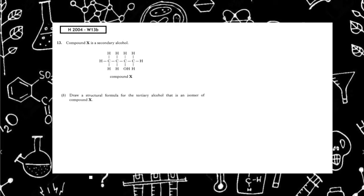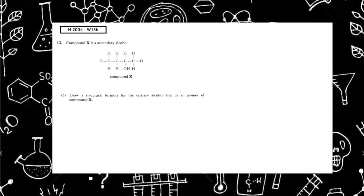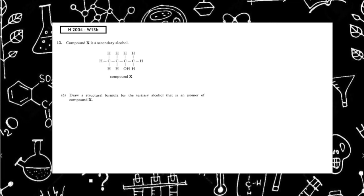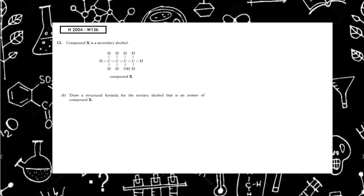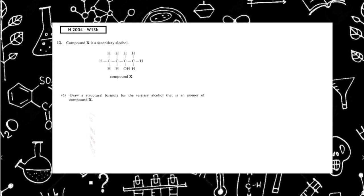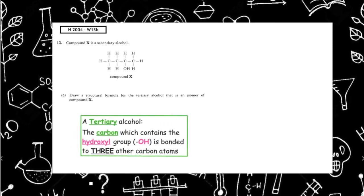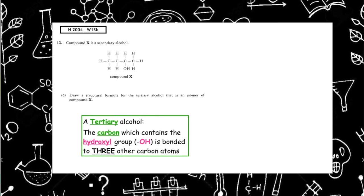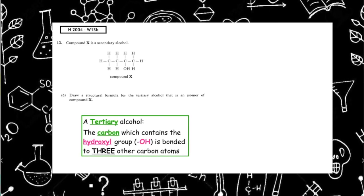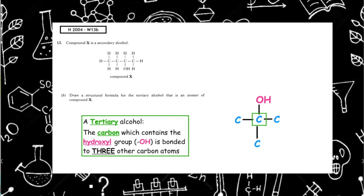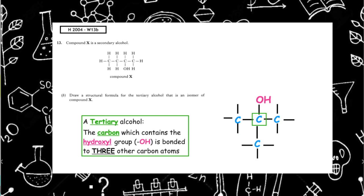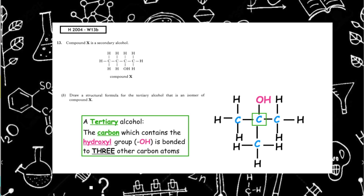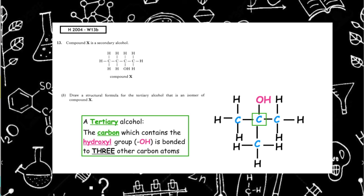Compound X is a secondary alcohol. Draw the structural formula for the tertiary alcohol that is an isomer of compound X. So remember the definition: a tertiary alcohol, the carbon which contains the hydroxyl group is bonded to three other carbon atoms. So if we draw the carbon with the hydroxyl group, we attach three other carbon atoms, fill out the lines, and then fill out with hydrogens. This gives our structural formula for our tertiary alcohol.